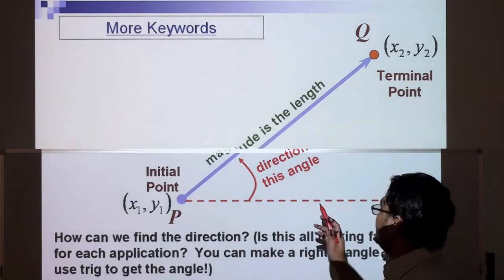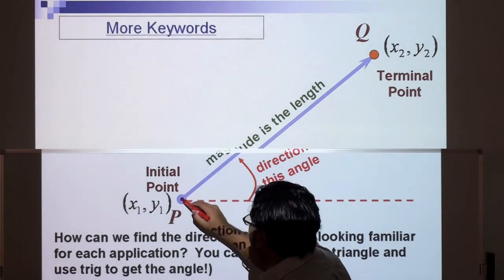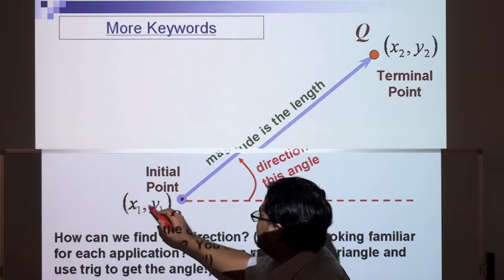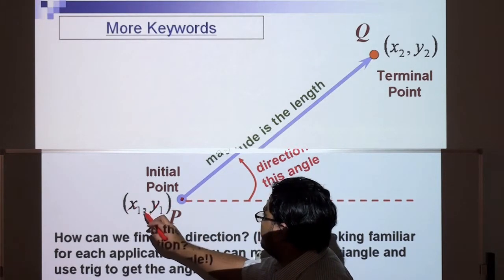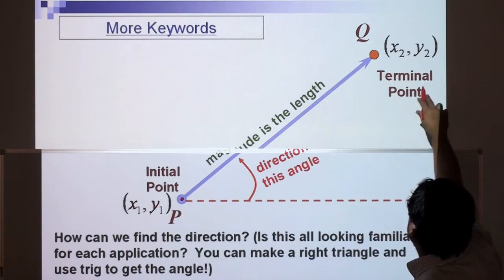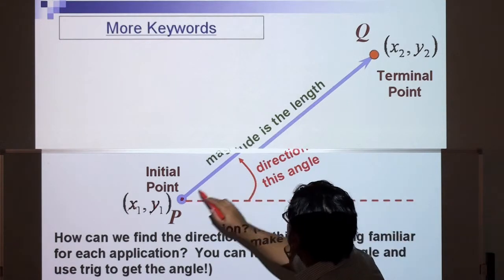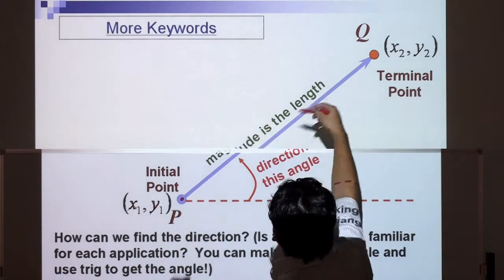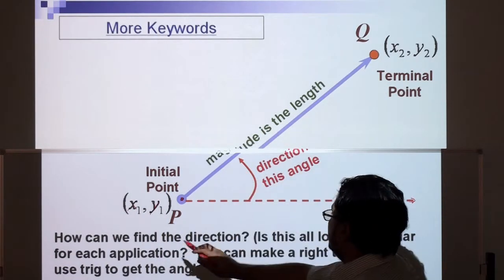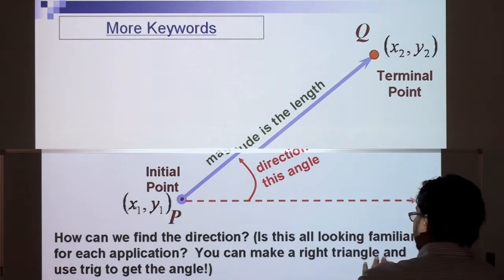Okay, so here we have some more keywords. We have what's called the initial point, this is where the vector starts. These are the coordinates, x1 and y1, and x2, y2 is the terminal point, the end of the vector. Here's the magnitude or the length, and the direction is the angle from here to there. How can we find the direction? Is this all looking familiar for each application? You can make a right triangle and use trigonometry to get the angle.